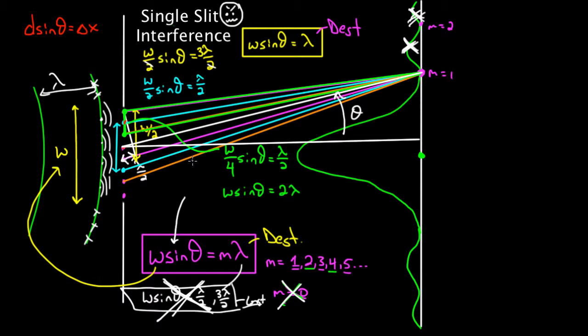Specifically, I'm going to try to show you that this same argument that we made for the destructive points won't work for the constructive points. And I think that'll help a little bit. In other words, this half-wavelength relationship won't give the constructive points — not exactly. It'll give it approximately, but it won't work exactly.